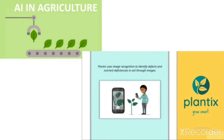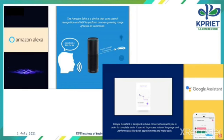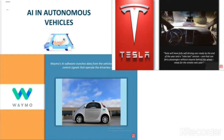The app Plantix uses image recognition to identify defects and nutrition deficiencies in soil through images. AI in social media: Facebook uses machine learning and deep learning to detect facial features and tag your friends. Amazon Alexa and Google Assistant are also notable applications of AI — the Google Assistant is designed to have conversations with you to complete tasks.